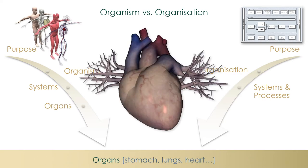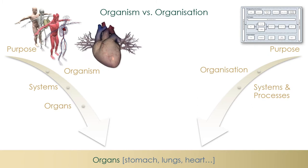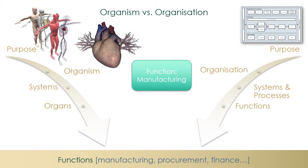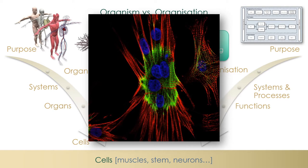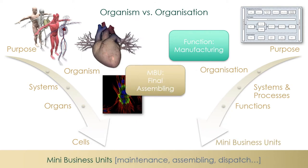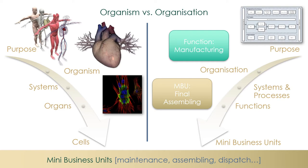Going back to the organism, organs are part of systems that are self-contained and have specific vital functions. Some organs support different systems, such as the liver. Examples of organs include the stomach, lungs, and heart. There are different functions in the organisation that support different systems, such as manufacturing, procurement, and finance. An organ is made up of large quantities of cells — the organism's smallest structural and functional units, such as the heartbeat cell. The MBU is to the organisation what a cell is to the organism: the smallest structural and functional unit. Examples of MBUs would be maintenance, assembling, and dispatch.